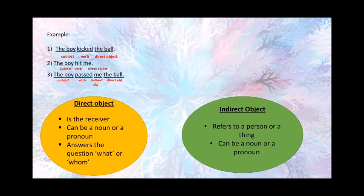Now let's see what is an indirect object. An indirect object is normally a person who receives something — an action which is being received. For example, the third sentence: The boy passed me the ball. In this sentence, the boy is the subject. Passed is an action word which is a verb.